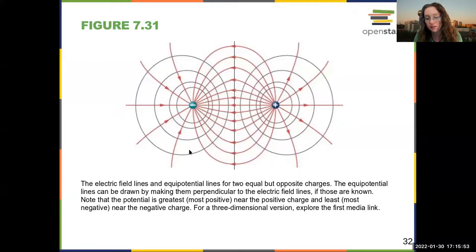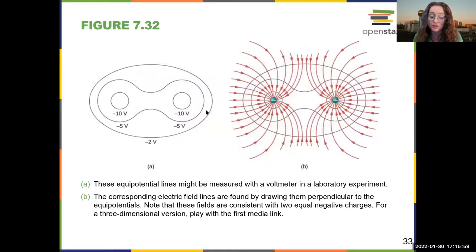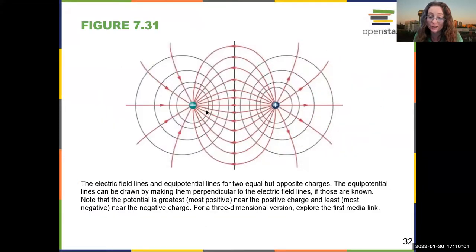How close these equipotential surfaces are corresponds to the strength of the field. When they are closer together, the field is stronger. What you see is that they get further apart over here and over here, because the field is not very strong. The height of your potential is not changing very quickly.